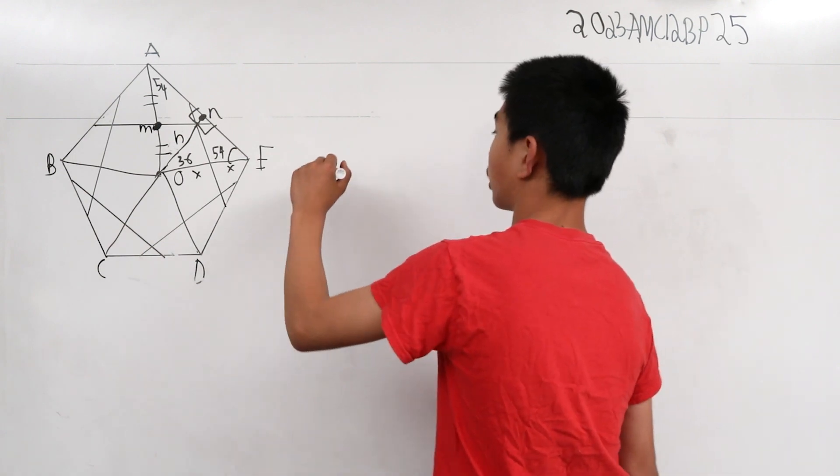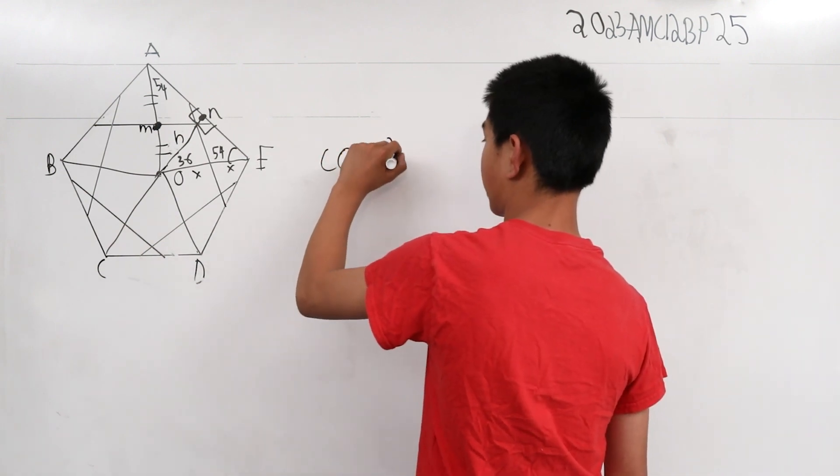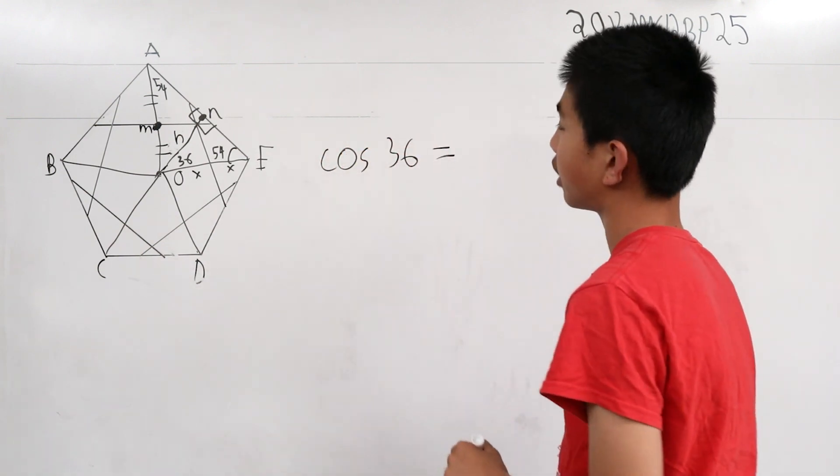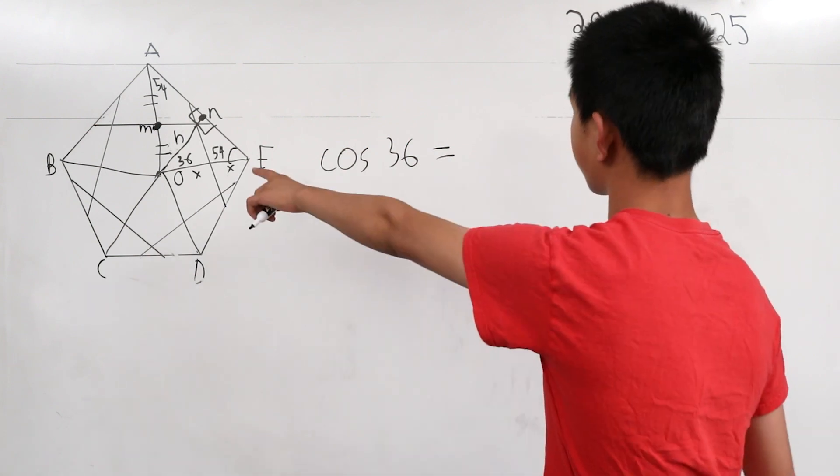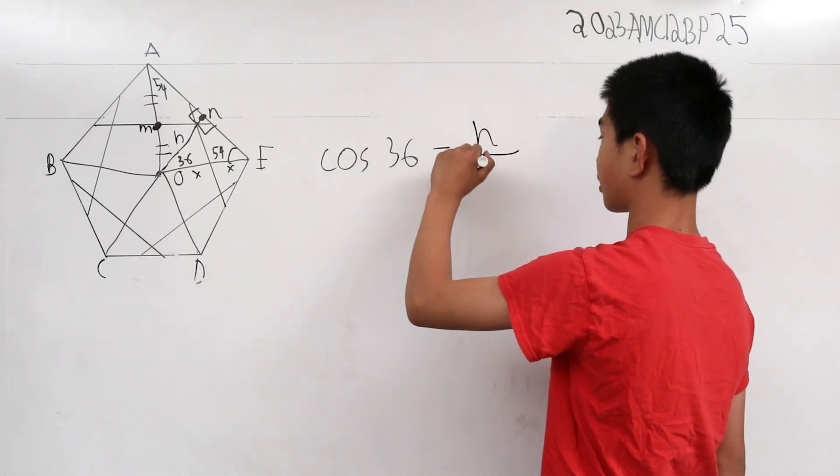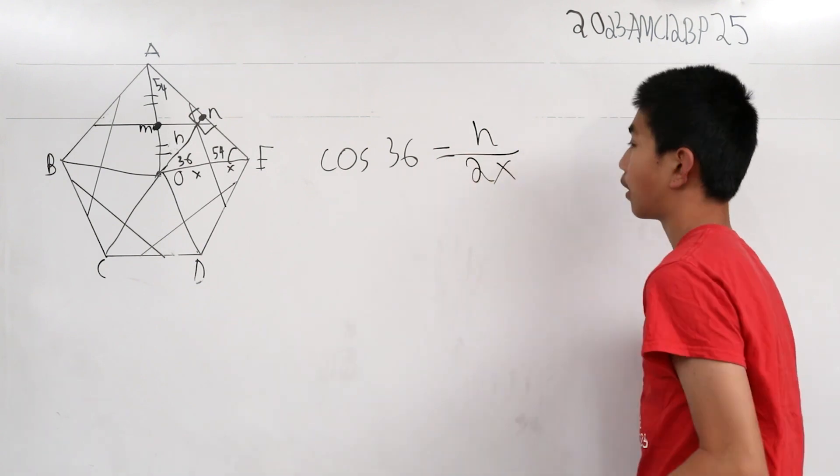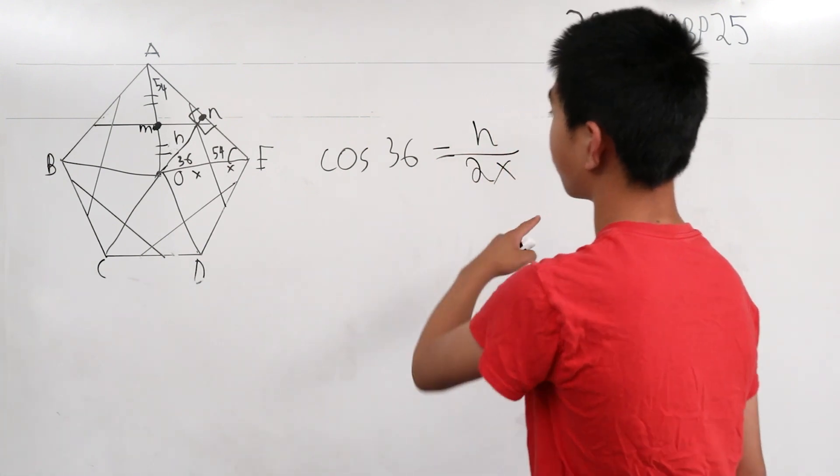Therefore, the cosine of 36 is going to be the opposite angle of that, which is h divided by 2x. And we've expressed that as a ratio for what we have.